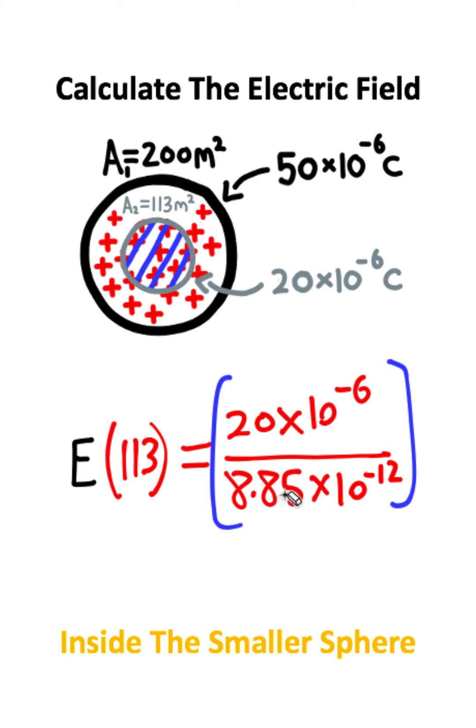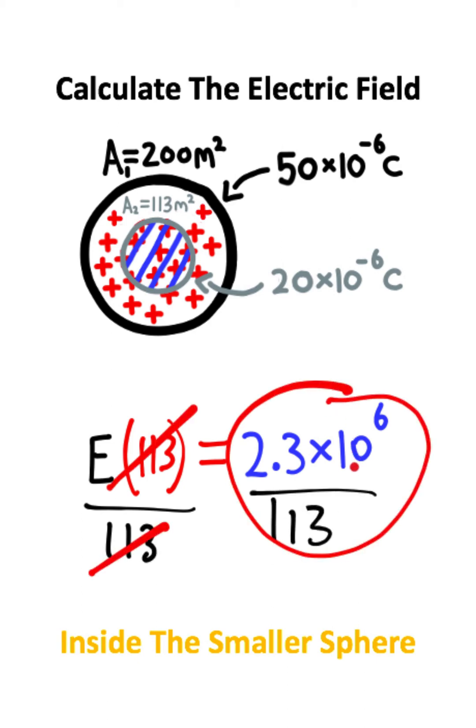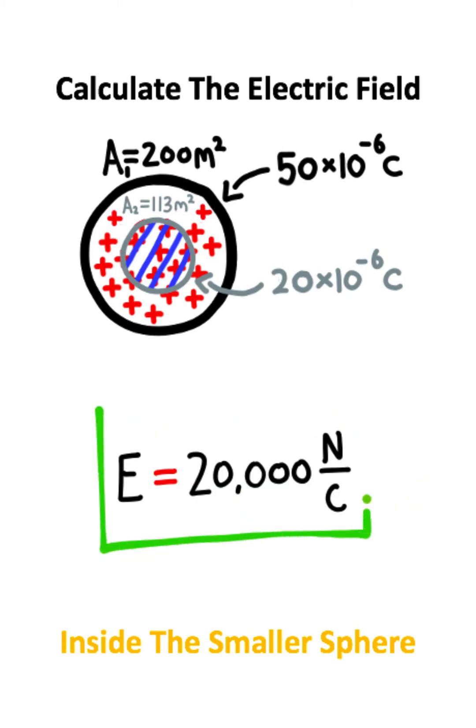20×10^-6 divided by 8.85×10^-12 equals 2.3×10^6. Now I'll divide both sides by 113. Dividing these two numbers, I get approximately 20,000 newtons per coulomb. This is the approximate electric field caused by the charge within the small imaginary Gaussian sphere.